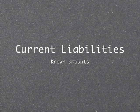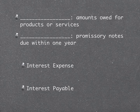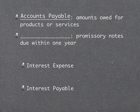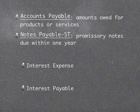In this video we're going to be talking about known amounts of current liabilities. To start, we're going to distinguish between two very common liability accounts: accounts payable and notes payable. Accounts payable are amounts owed for products or services — typically amounts owed to your vendors, someone you're buying your inventory from that you're going to later sell. Notes payable are monies that you borrow and pay back; these are usually long-term, but you can have short-term notes payable as well.